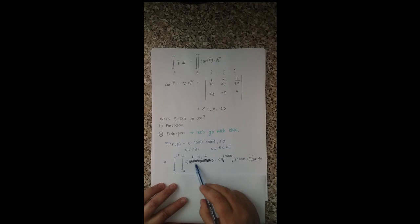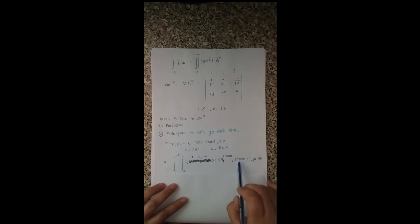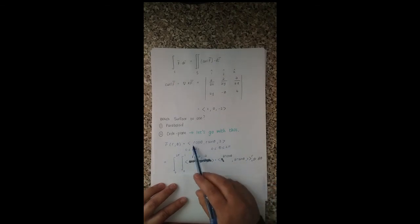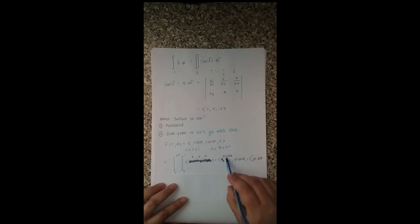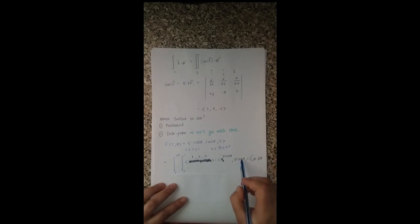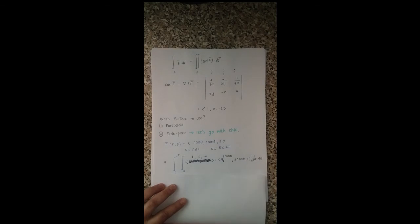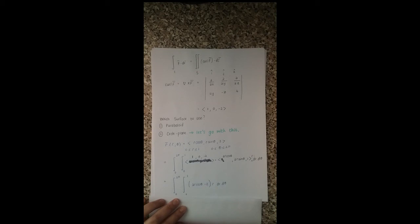For a flux integral we dot-product the curl of F with the gradient vector. Since we parametrized in terms of r and θ, we change the x, y, and z values accordingly — giving us 2r cos θ and 2r sin θ. We add the factor r as the integrating factor from the change of variables. Simplifying gives us the flux integral, which equals the line integral of this specific curve.